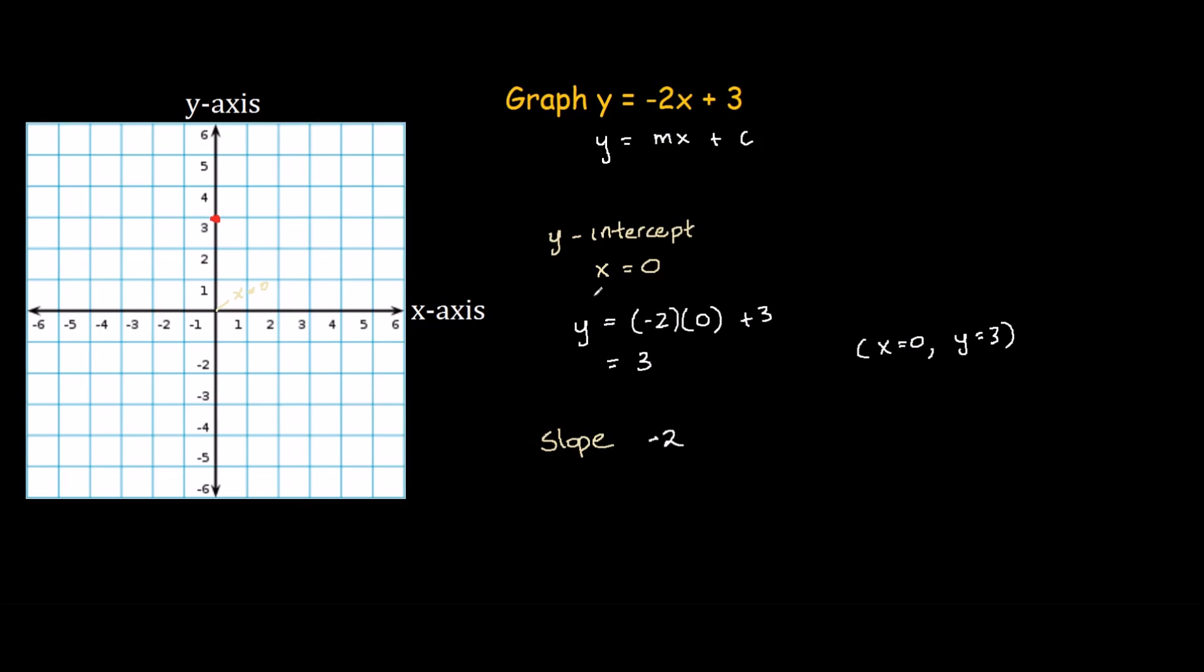To understand what slope means: for every one unit you go across, you go down -2. So 1 across, 1, 2 down, and that will be the next point on our line.